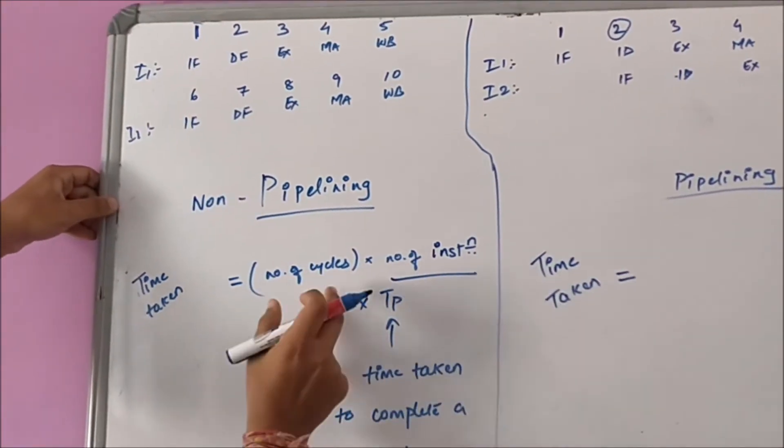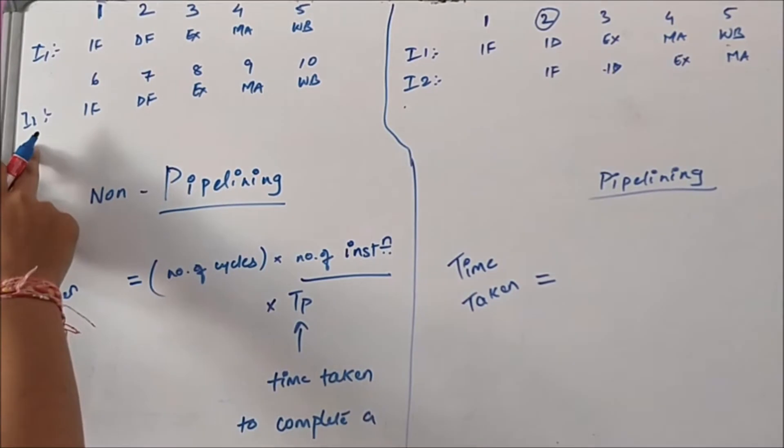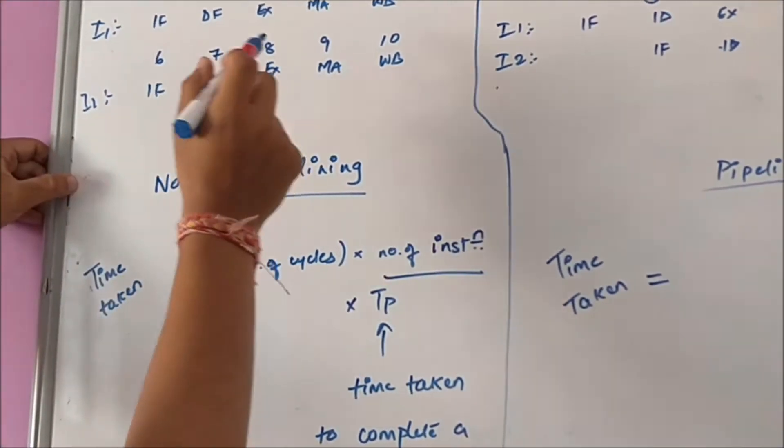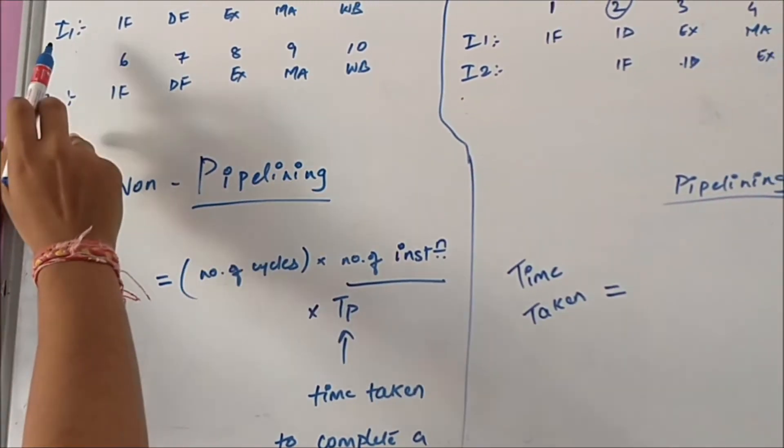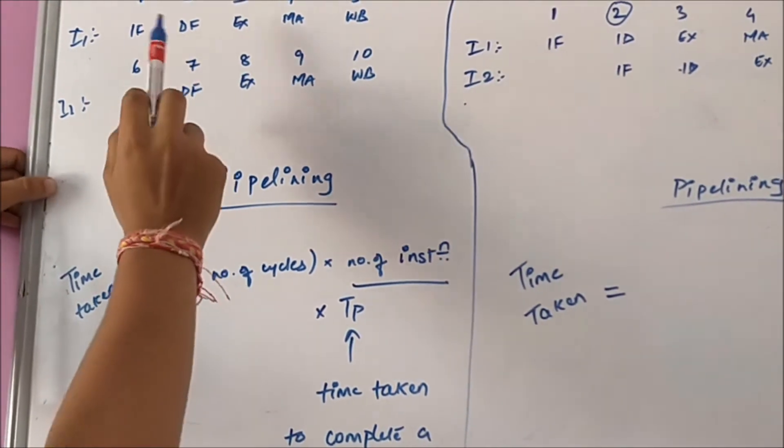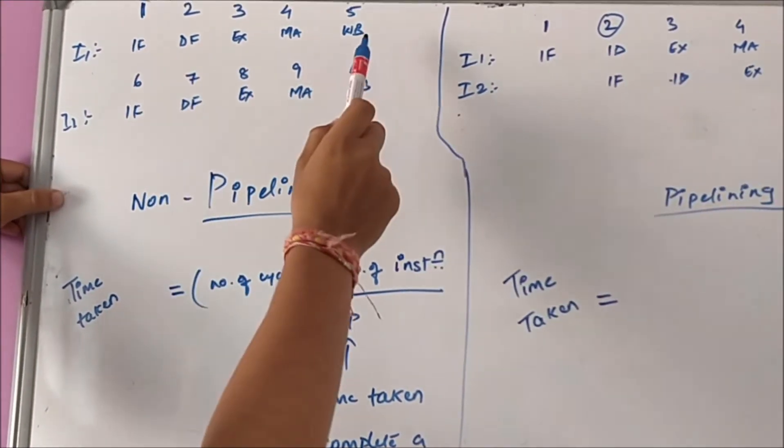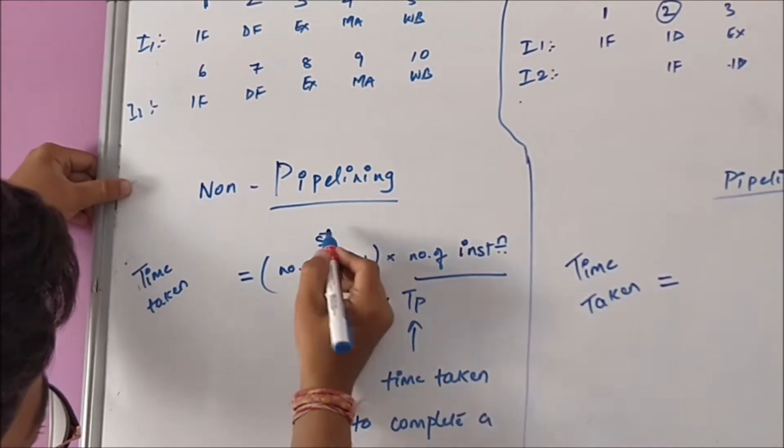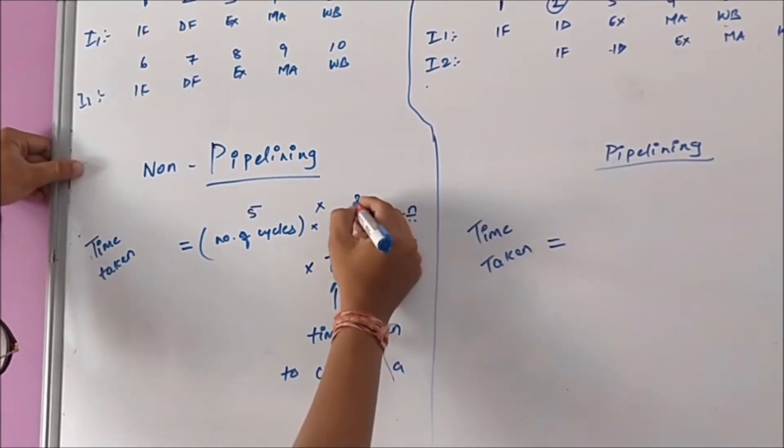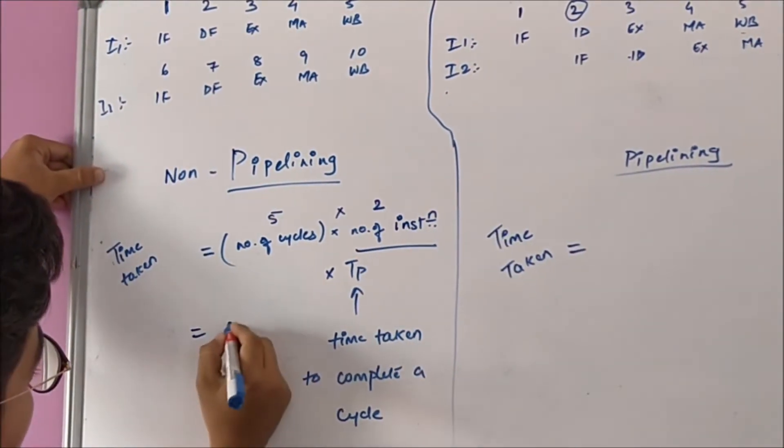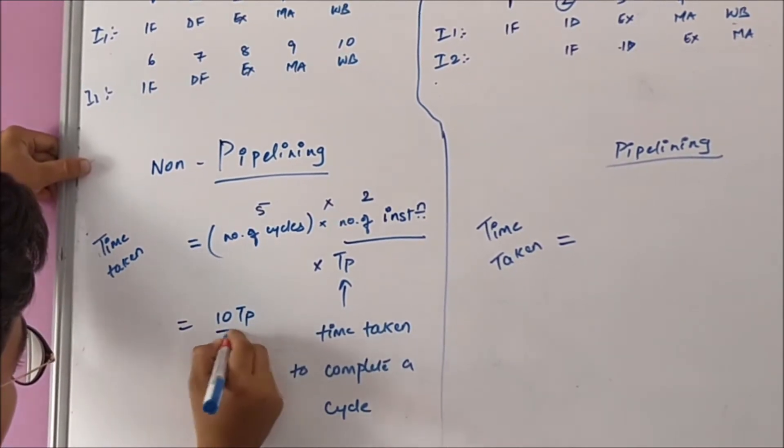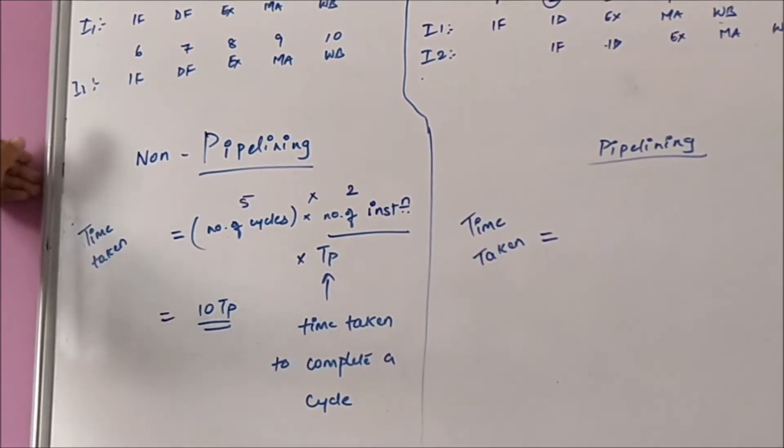There will be number of instructions into number of cycles for each instruction. For a single instruction, there are five cycles. So five into number of instructions are two into TP. This is the time taken by non-pipelining architecture.